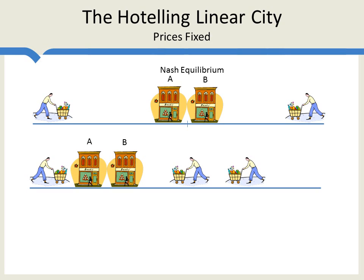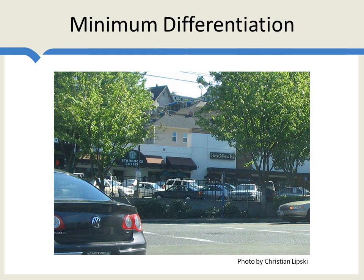You might ask, is this a realistic situation where prices are fixed? Yes, sometimes it can be. In France, for example, booksellers aren't allowed to charge different prices. But there are other applications as well. We sometimes do see a principle of minimum differentiation in location decisions. Here's a Starbucks, and right next door we have Pete's. The prices at Starbucks and Pete's are going to be determined by national considerations and not set at every individual store. Thus, this is an example of a location decision where prices are fixed. Pete's and Starbucks do try to differentiate their product in other ways, but it's hard enough to solve this model in one dimension, let alone two or more.